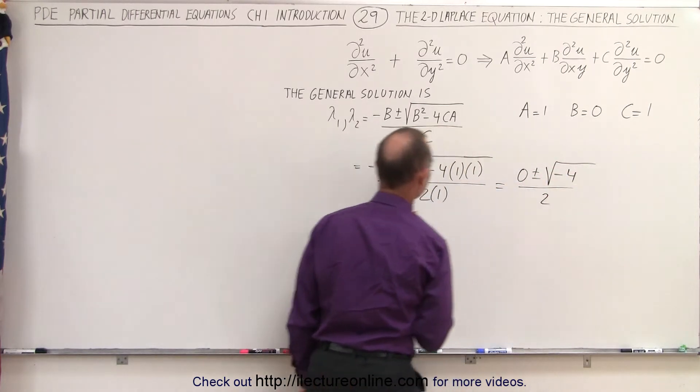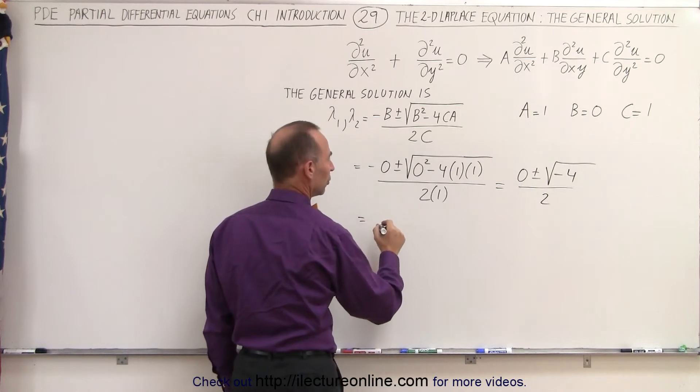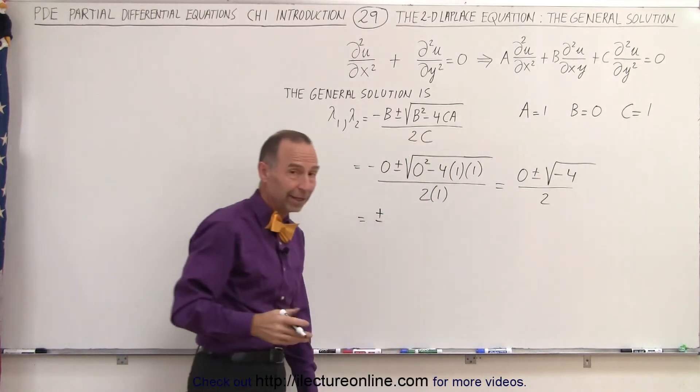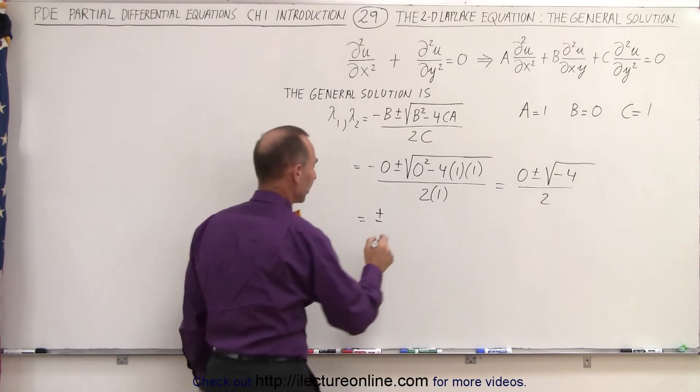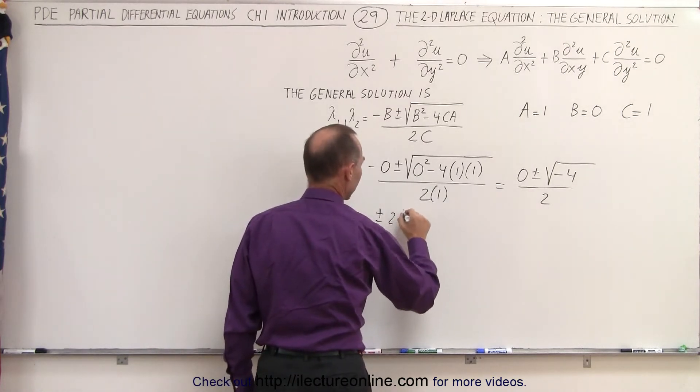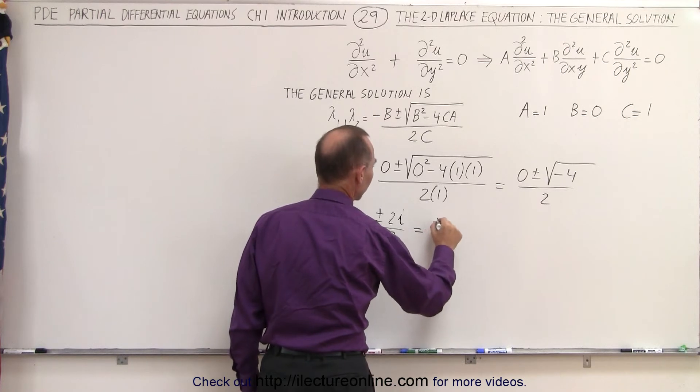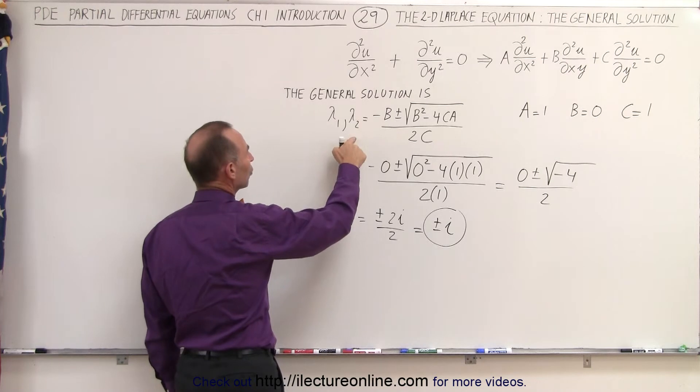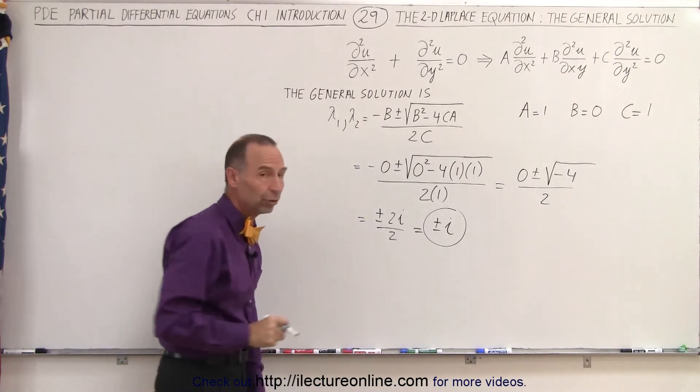So this becomes equal to 0 plus or minus the square root of minus 4, all divided by 2. This is equal to plus or minus, now of course, since this is a negative underneath the radical, we have to use the imaginary number, that would be plus or minus 2i, divided by 2, which means it's plus or minus i. And so this here is the solution, or the general solution, for lambda 1 and lambda 2.